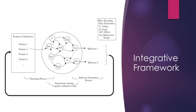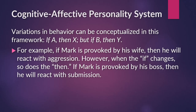Mischel is saying that different situations may produce different behaviors, and we don't behave similarly in all situations. He believed that variations in behavior can be conceptualized as: if A, then X; but if B, then Y. For example, if I am in school, then I'm going to be quiet and behave. But if I'm with my friends outside, then I can be myself. So if the situation changes, so does the behavior.